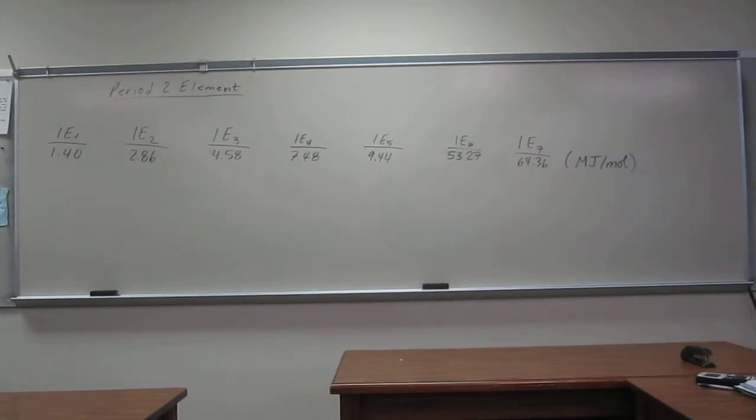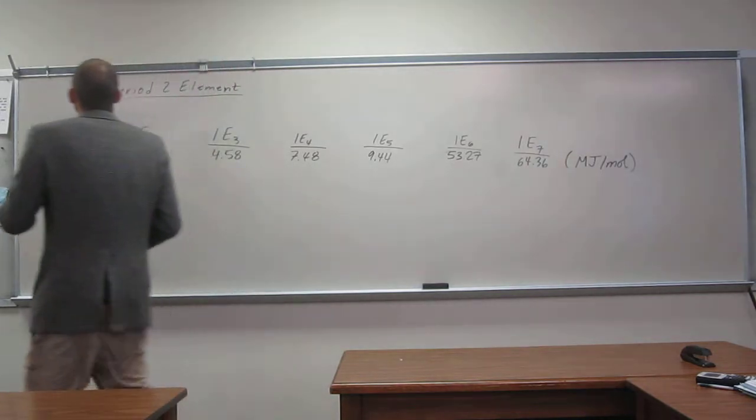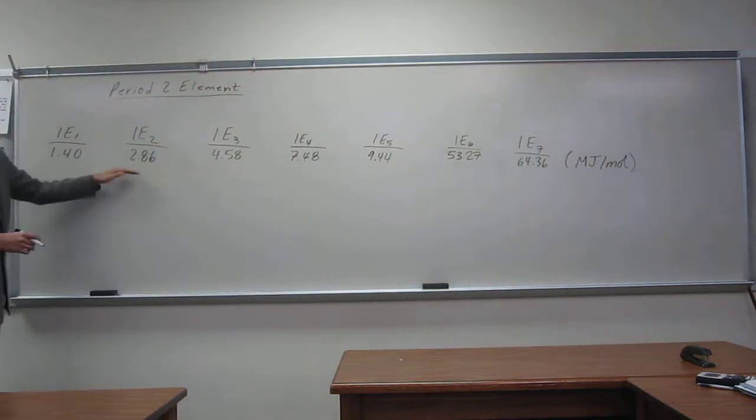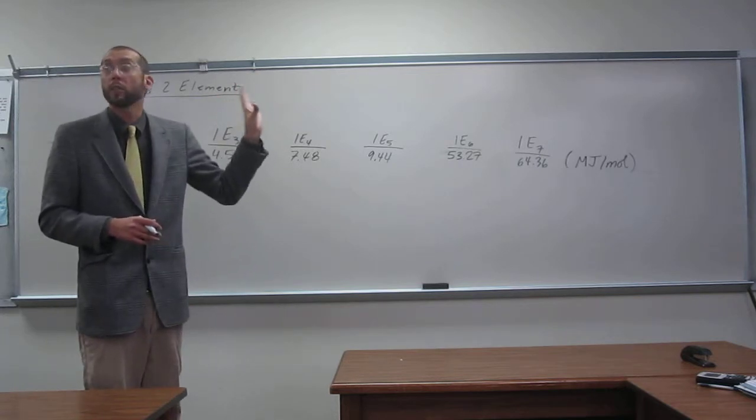So for the following period 2 element, let's find the big jump in successive ionization energies and then identify which element we're dealing with. So listed are the different ionization energies or the successive ionization energies for this particular period 2 element.